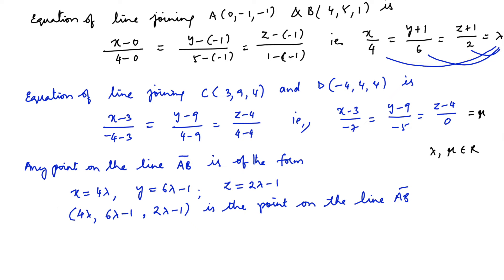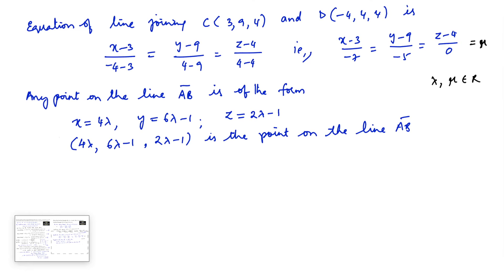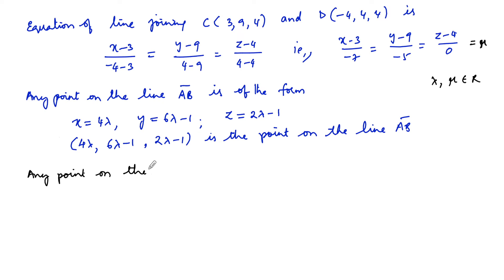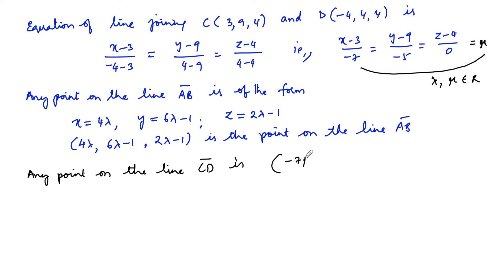Similarly, for any point on line CD, let the ratio equal parameter μ. Since (x - 3)/(-7) = μ, we get x = -7μ + 3. The y-coordinate gives y = -5μ + 9. And since the z-denominator is 0, z = 4 (constant). So any point on line CD is (-7μ + 3, -5μ + 9, 4).